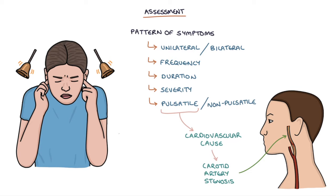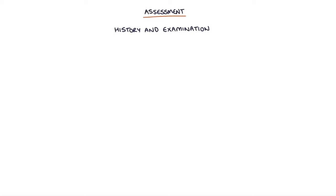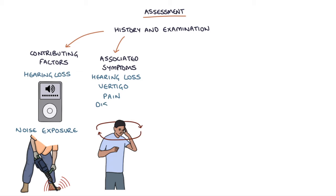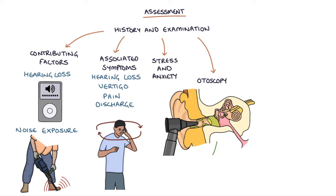A focused history and examination can be used to identify any underlying causes, and this will include assessing for contributing factors such as hearing loss or noise exposure, associated symptoms, for example hearing loss, vertigo, pain, or discharge from the ear, stress and anxiety that may be contributing. Otoscopy can be used to look in the ear for causes such as earwax or infection, and Weber's and Rinne's tests can be used to assess hearing loss.